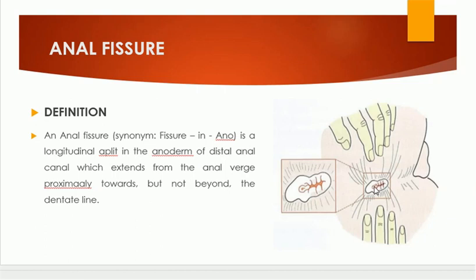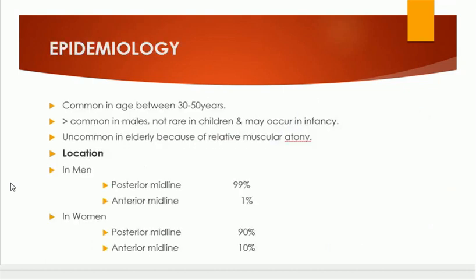Regarding the epidemiology of anal fissure: this is common in the age group between 30 to 50 years of age. It is more common in males when compared with females. It is not rare in children but may also occur in infancy.